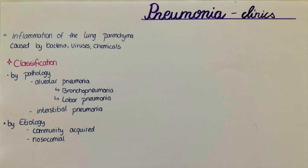We can classify pneumonia according to different criteria. The first one is classification by pathology. It can be divided into alveolar pneumonia, affecting the alveoli, and interstitial pneumonia, affecting the interstitium — the connective tissue between the alveoli and the blood vessels. Alveolar pneumonia can be further divided into bronchopneumonia and lobar pneumonia.